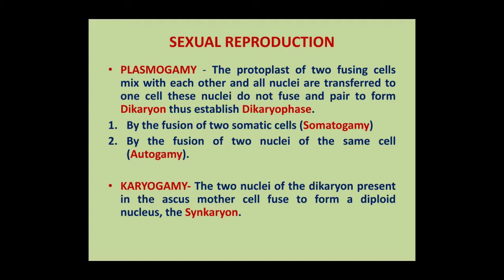In plasmogamy, the protoplast of two fusing cells mix with each other and all nuclei are transferred to one cell. These nuclei do not fuse; they pair to form a dikaryon, thus establishing the dikaryon phase. There are two ways by which plasmogamy occurs: somatogamy and autogamy.